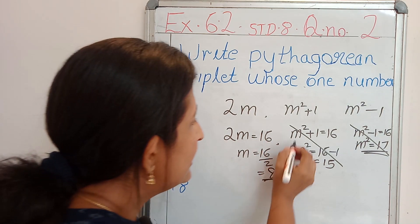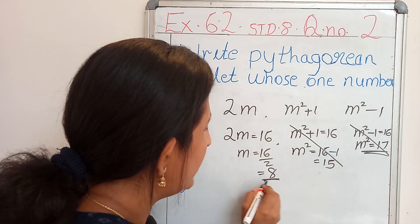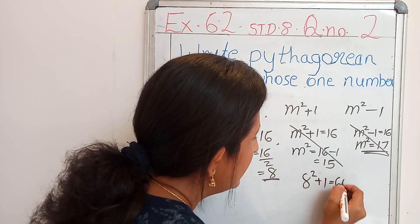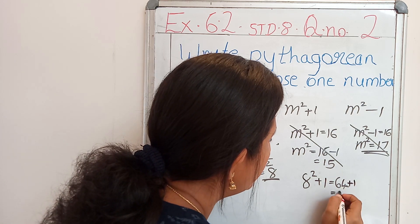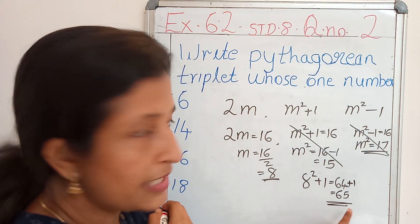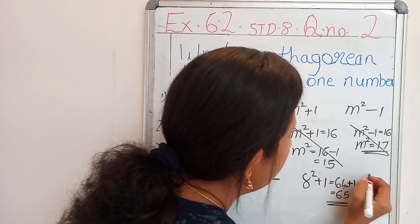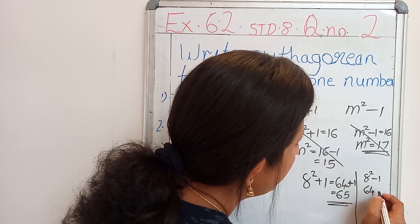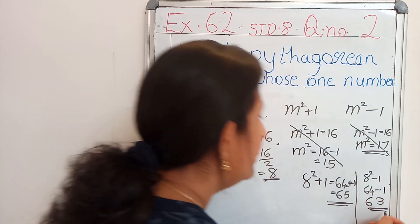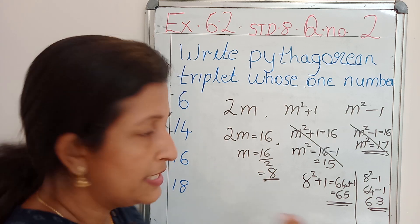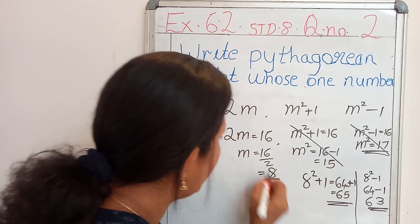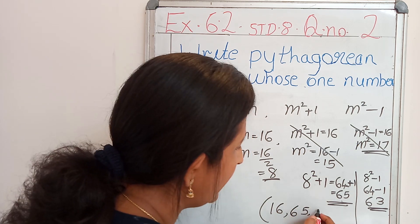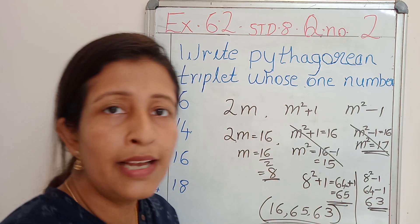2m equals 16. What will be the value of m square plus 1 if m is 8? That is 8 square plus 1, that is 64 plus 1 equals 65. Then the other Pythagorean triplet is 65. Then m square minus 1, that is 8 square minus 1, that is 64 minus 1 equals 63. We got all 3 Pythagorean triplets. Let's rewrite them in a bracket: 16, 65, 63. These 3 are the Pythagorean triplets.